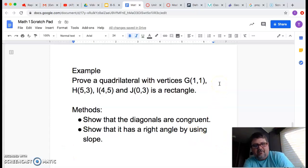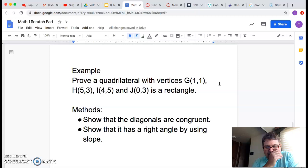Hey everybody, welcome back. We're going to do a quick proof here and we're going to show this quadrilateral with vertices G(1,1), H(5,3), I(4,5) and J(0,3) is a rectangle.